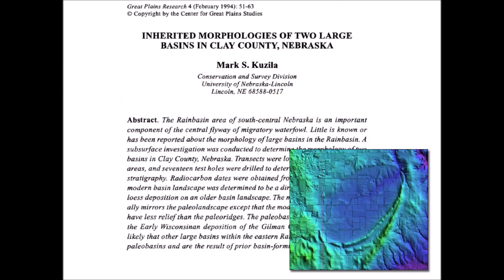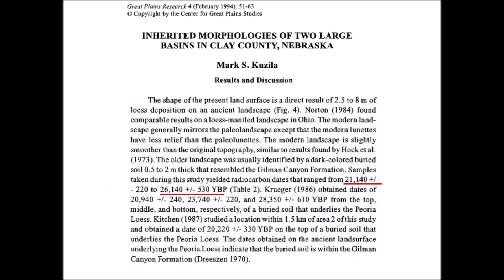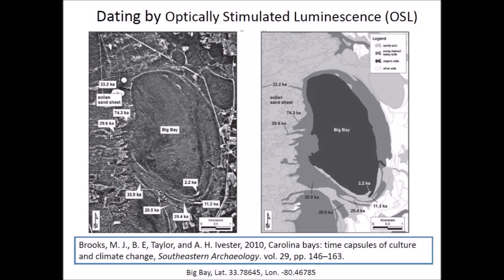Many of the proposed dates for the origin of the Nebraska Rainwater Basins and the Carolina Bays come from radiocarbon dates and optically stimulated luminescence. Although the dates may not reflect the time of formation of the bays, they correspond to the date of the terrain and can provide general guidance about the time of emplacement. The radiocarbon dates for the Nebraska Rainwater Basins range from 21,000 to 26,000 years ago, placing their formation during the last glacial maximum. A study of the Carolina Bays using optically stimulated luminescence produced dates ranging from 2,200 to 74,300 years ago, all within the range of the Wisconsin glaciation except for one recent date.